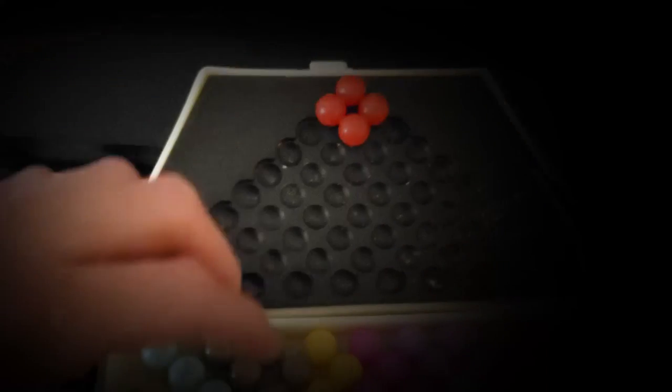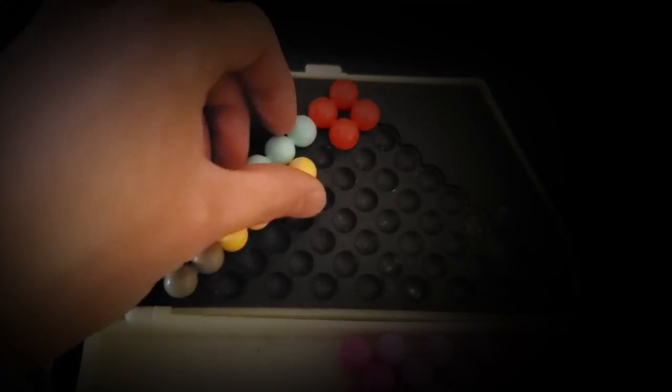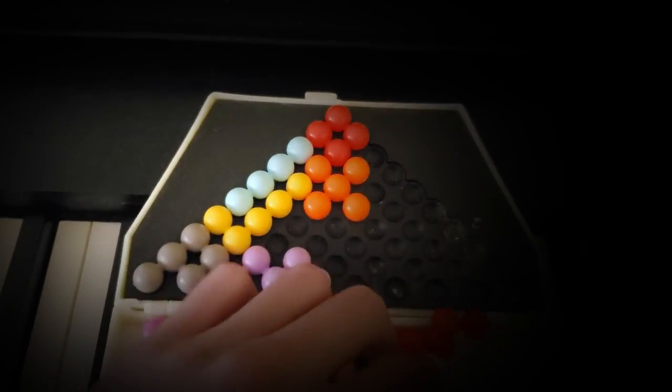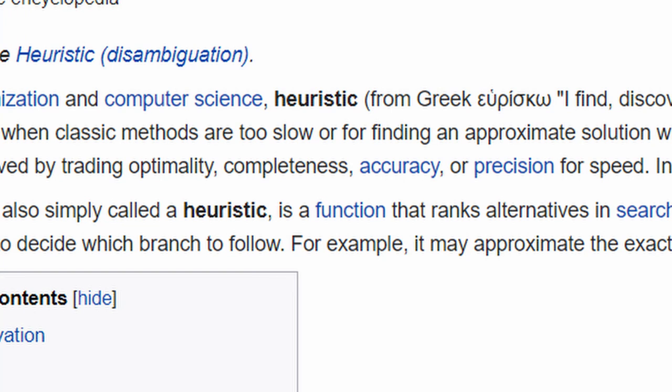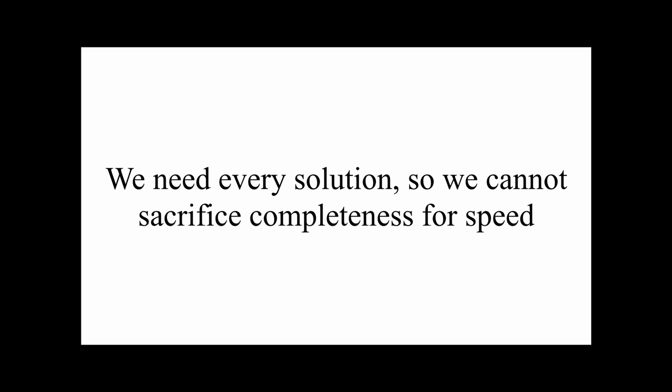If you examine how real humans solve this puzzle, they tend to want to snuggle pieces next to each other, in essence maximizing the filled space adjacent to each piece that is placed. This is what we call a heuristic, which while it will allow us to find solutions more quickly, it sacrifices optimality, completeness, accuracy, or precision to do so. Unfortunately, we need every solution, so we cannot sacrifice completeness for speed.